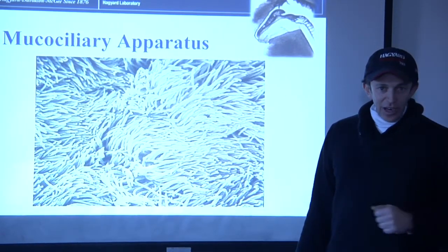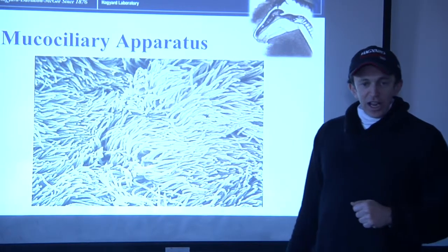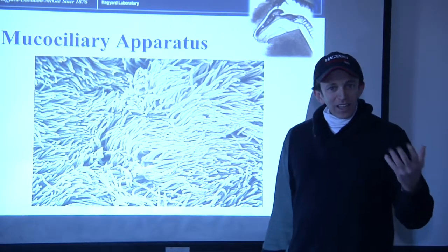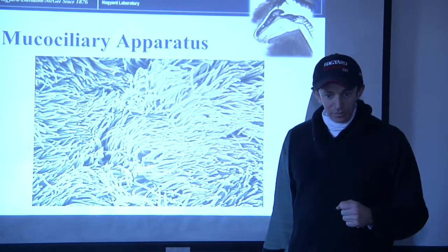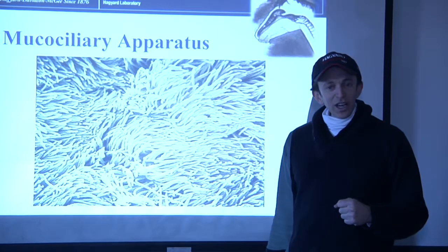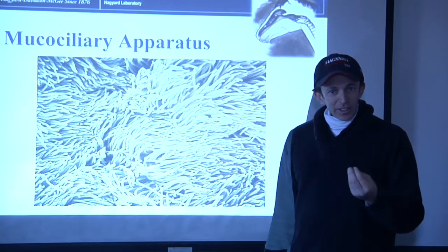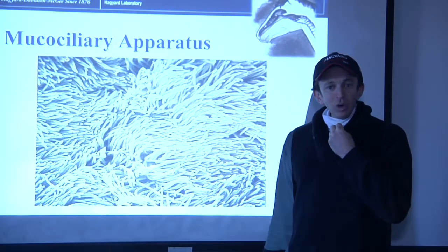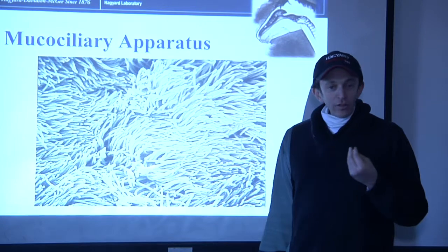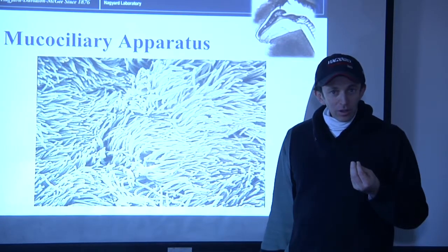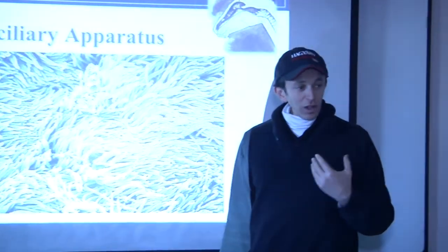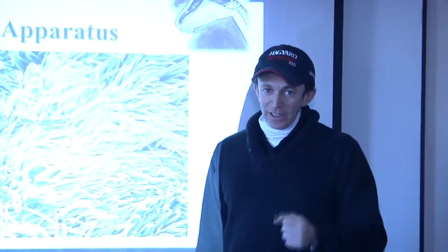It's called the mucociliary apparatus. What the shag rug does is literally collect dust and particles, and it actually moves in unison to help bring that dust and particulate matter into your oropharynx. You can cough it up, get this little sputum, and you'll swallow it. That's a natural mechanism for clearing your lower airway — it's like an escalator system.